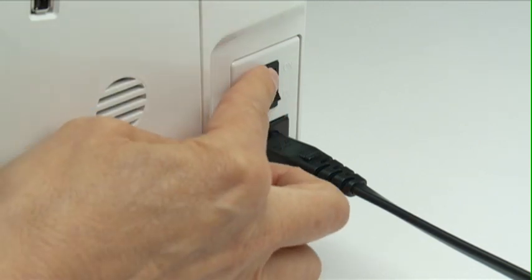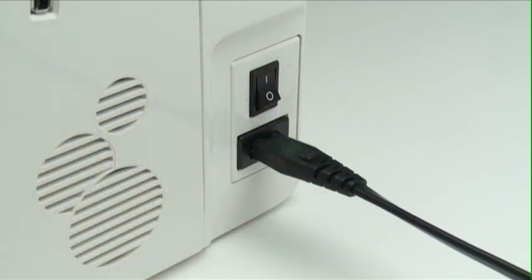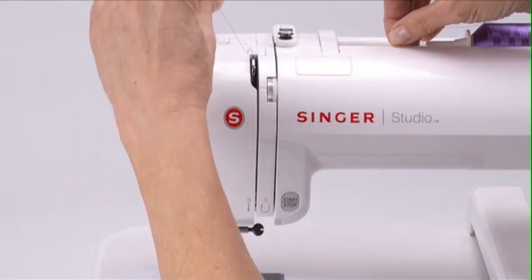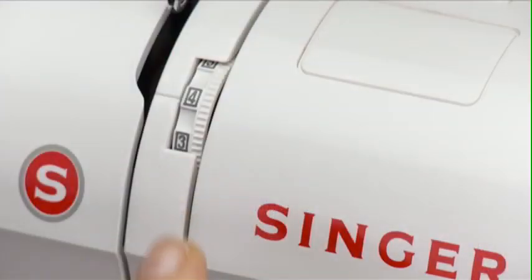In this chapter, we'll show you how to connect the machine to the power supply, how to wind a bobbin, how to thread the machine, and how to adjust thread tension.